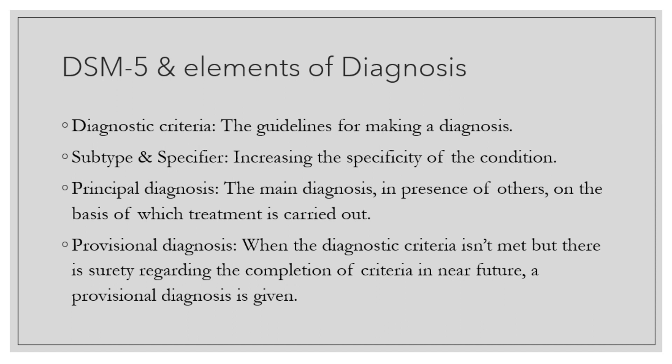Generally in DSM, the options for subtypes are preceded by 'specify whether' and the options for specifiers are preceded by 'specify' or 'specify if.' Then we have a principal diagnosis, which is our main diagnosis in the presence of multiple diagnoses, and treatment is given on the basis of the principal diagnosis. In case the complete criteria has not been met, we resort to a provisional diagnosis, which is used when we are sure that in the near future the diagnostic criteria will be met.